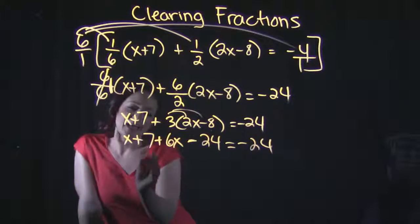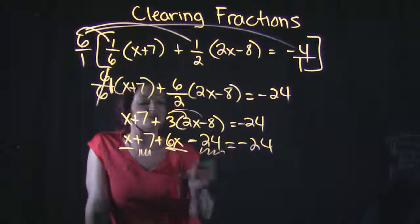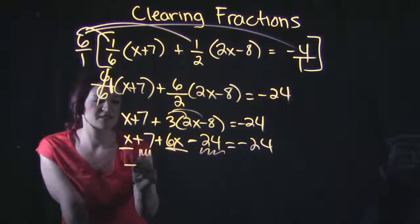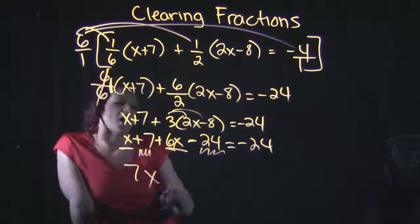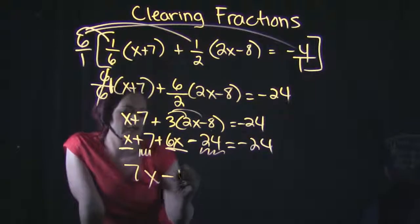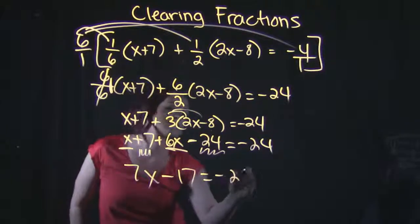Combine like terms on the left-hand side. We have two sets of like terms: our variables and our numbers. When we combine those together, one x plus six x is seven x, seven minus this 24 here gives me negative 17, equals this negative 24.